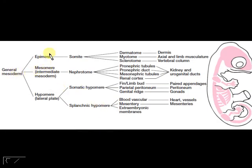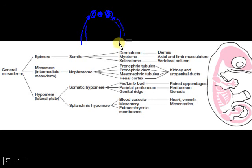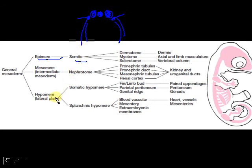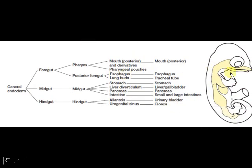The same is true for the mesoderm. Remember that the chorda mesoderm is in the middle, and it divides laterally into the epimere, mesomere, and lateral plate mesoderm. The epimere mostly becomes the limbs, the intermediate mesoderm mostly becomes the kidneys. For the lateral plate mesoderm, the somatic layer mostly forms the gonads, and the splanchnic mesoderm usually forms the blood vessels and circulatory system. The cells that used to hold the yolk — the endoderm — mostly form the gut.